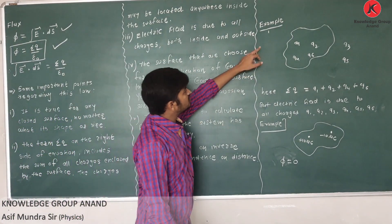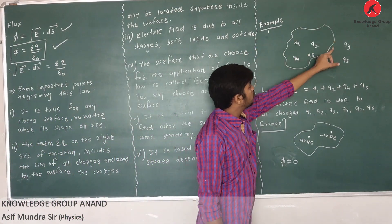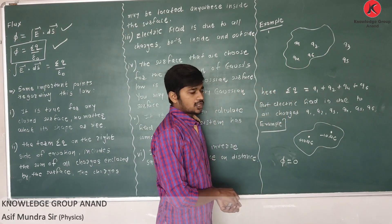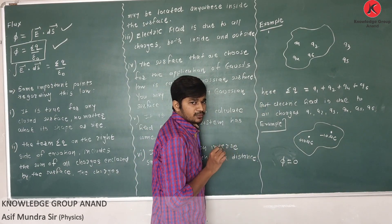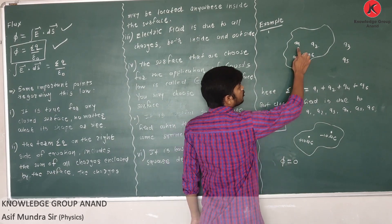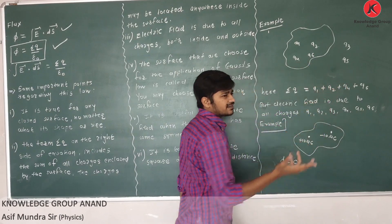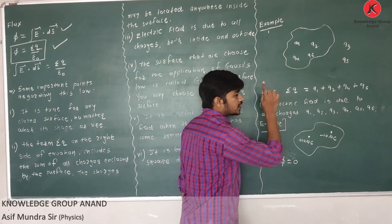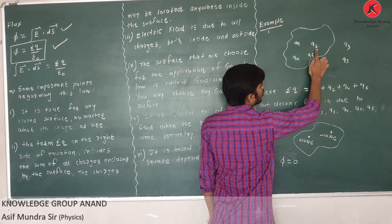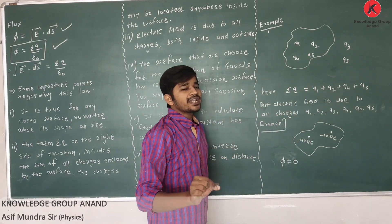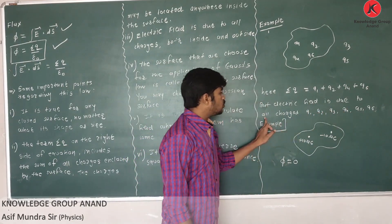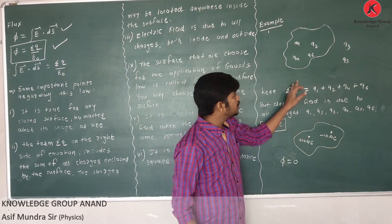Let's take one example. It is a closed surface with charges Q1, Q2, Q3, Q4, Q5, Q6. To apply Gauss's Law: φ = ΣQ/ε₀, where ΣQ is the total charge enclosed by the Gaussian surface. So if Q1, Q2, Q4, Q6 are inside the surface, then ΣQ = Q1 + Q2 + Q4 + Q6. Note that Q3 and Q5 are outside. But the electric field is due to all charges, both inside and outside.